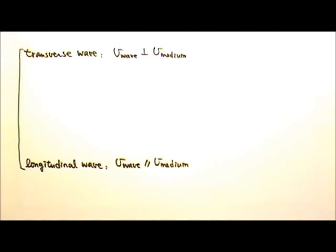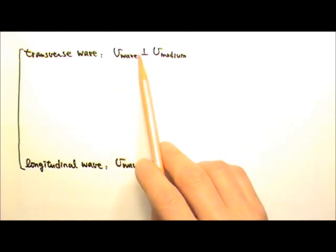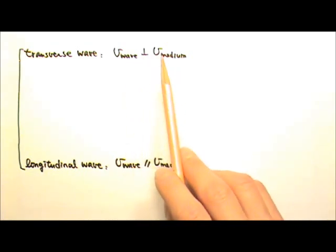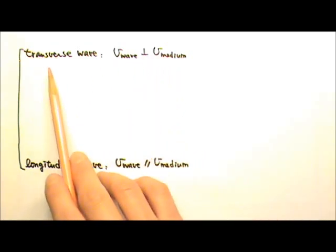This is another way to categorize waves. We compare the motion of the wave to the motion of the medium. If the velocity of a wave is perpendicular to the velocity of the medium, it's a transverse wave.